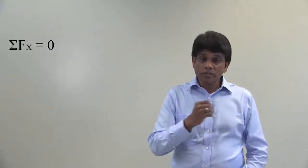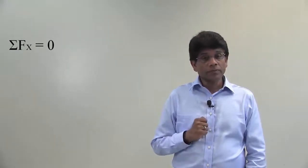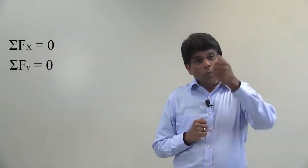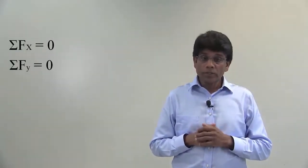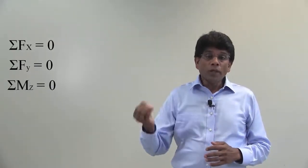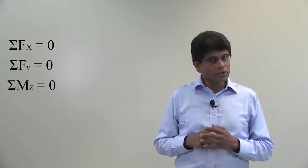In particle problems, we have two equations, summing up all the forces along two axes, x and y. In 2D rigid body problems, we will have an additional equation for moment. So we will have sum of all the forces along x axis equal to zero, sum of all the forces along y axis equal to zero, and sum of all the moments of all the forces about a point equal to zero.